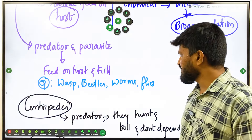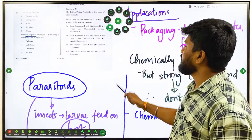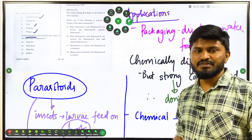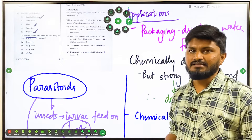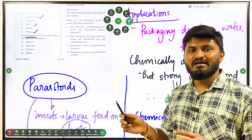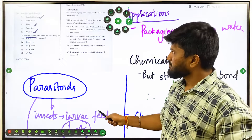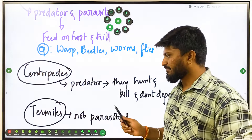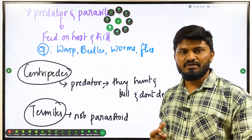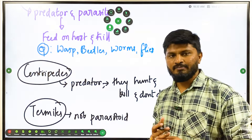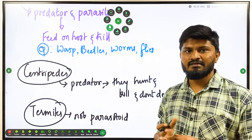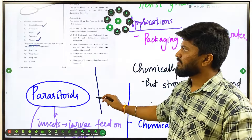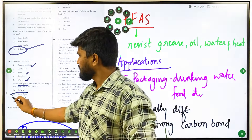Examples of parasitoids include wasps, beetles, and flies — so these three are correct. Centipedes have a hard exoskeleton and are predators — they hunt and eat animals without needing a host, so they are not parasitoids. Termites similarly are predators in nature, like ants, hunting other animals. They are also not parasitoids. So the correct answer is option B — only three.